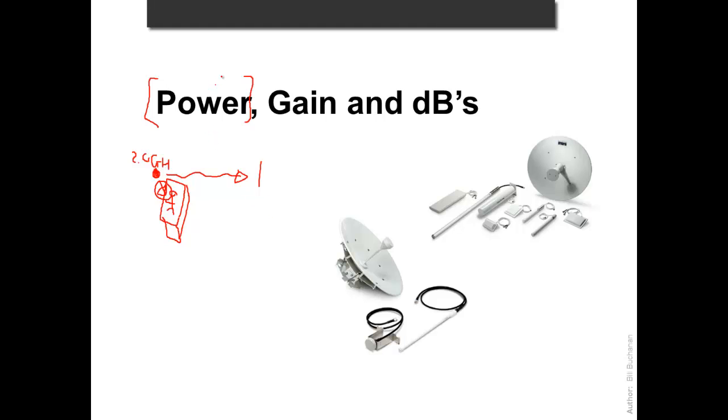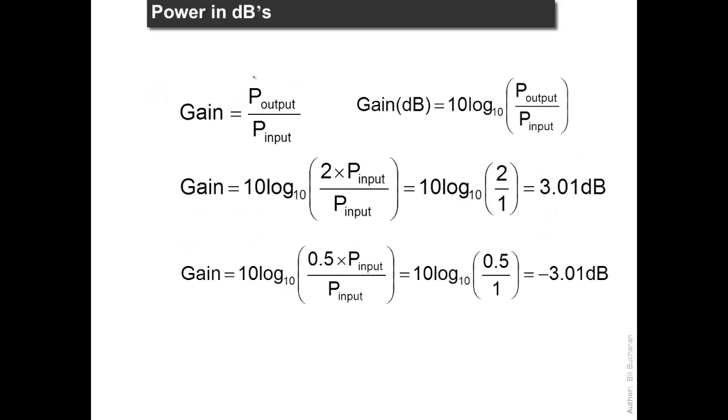So what we have is power and obviously we use amplifiers to be able to increase the power or even decrease it. And that's in terms of the gain. So the gain of a system is typically defined as the power out of the system divided by the power in. So if we have one watt of an output and we have 0.5 watts input then we have a gain of 2.